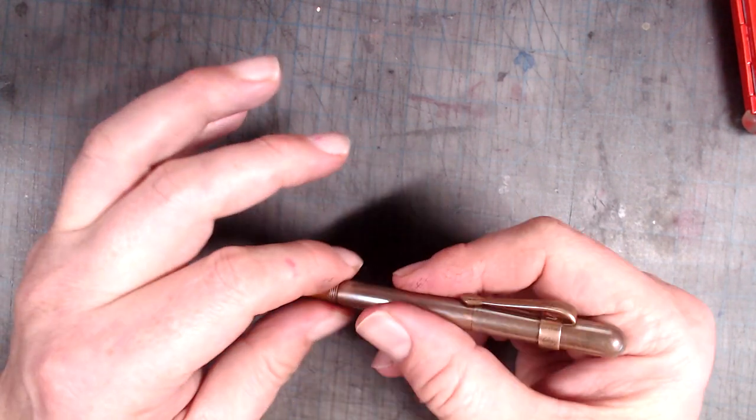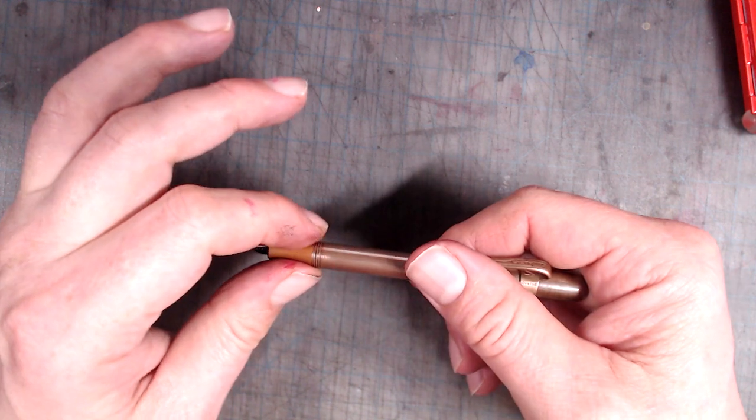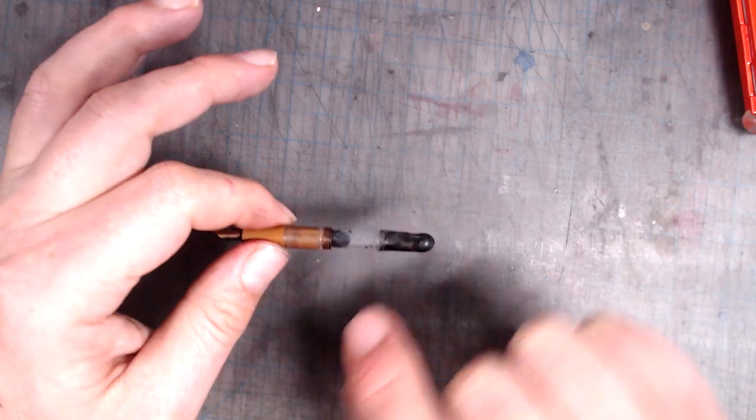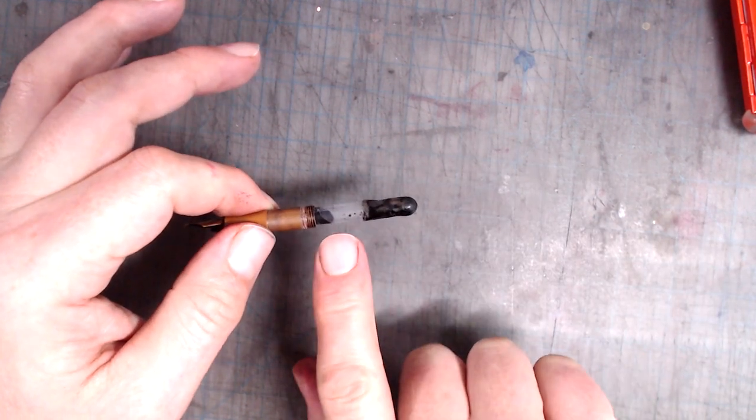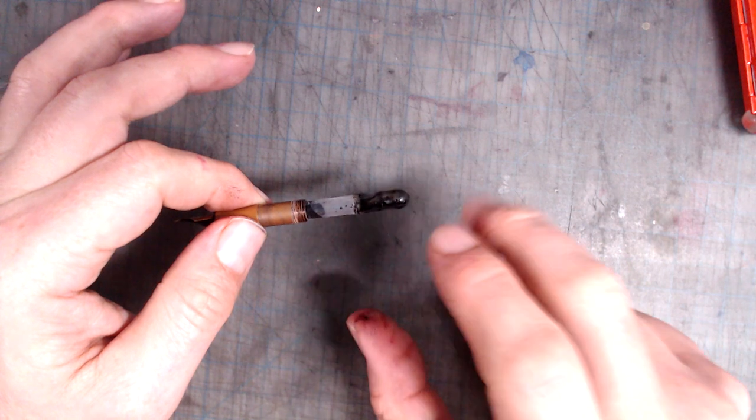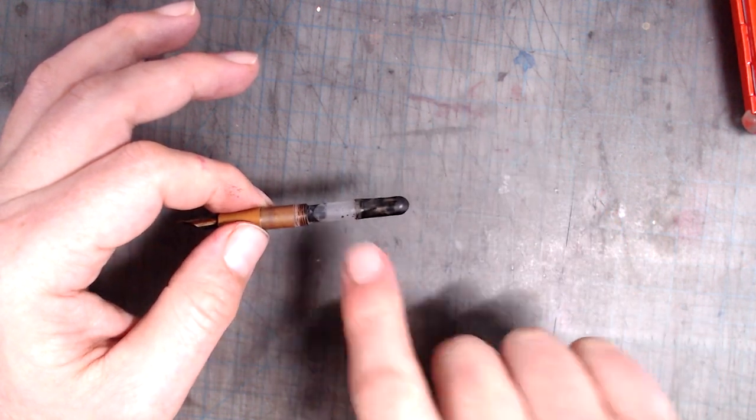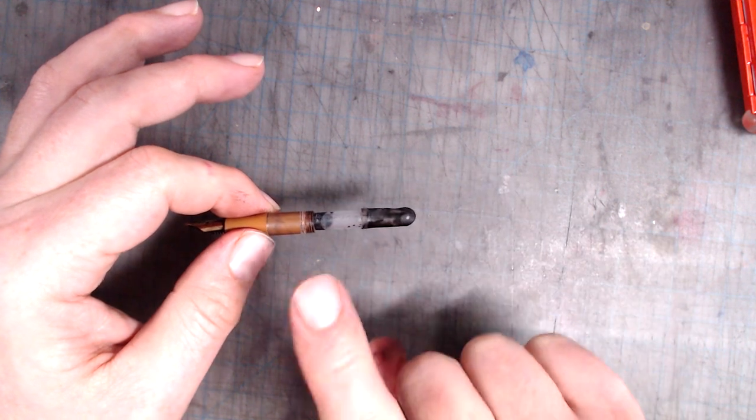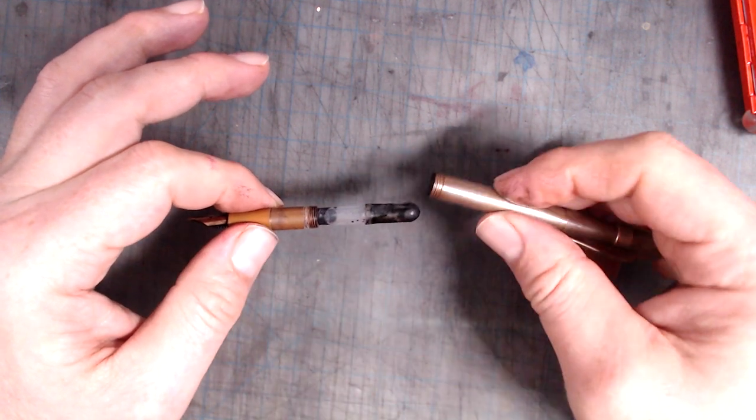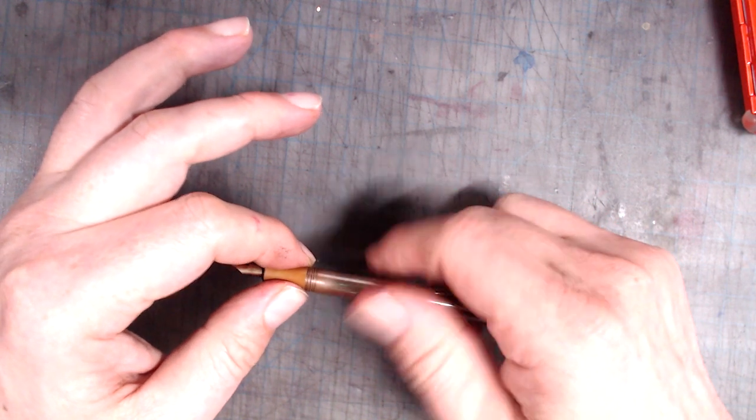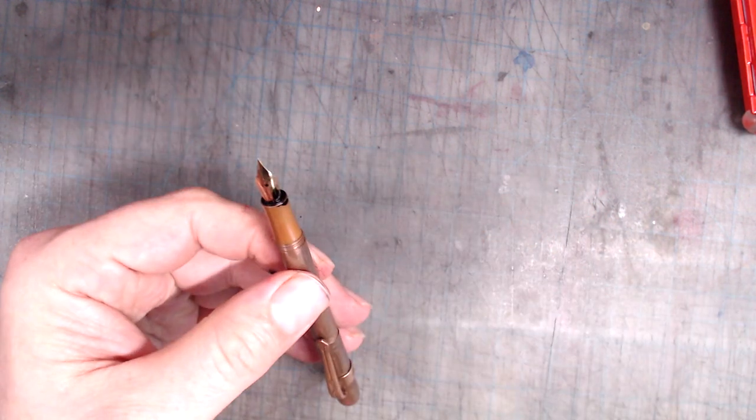Besides the slipperiness of the grip section, the other drawback is that it uses a short international cartridge, which has very little ink capacity. That issue could be fixed, however, if you make this little squeeze converter out of a few simple materials that can easily be acquired online. If you want to see a tutorial on how this little squeeze converter is made, you can see my full review of the Kaweco Lilliput. Now, of course, you can always carry additional ink cartridges, which really isn't that big a deal.